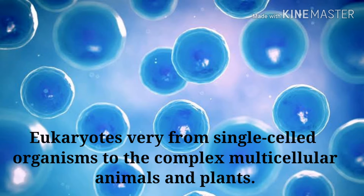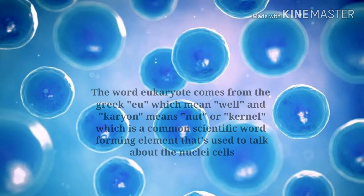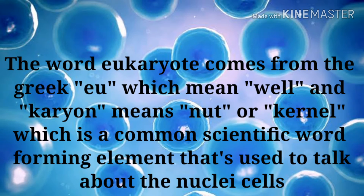Eukaryotes vary from single-celled organisms to complex multicellular animals and plants. In fact, most living things are eukaryotes, made up of cells with distinct nuclei and chromosomes that contain their DNA. The word eukaryote came from 'eu,' which means 'well,' and 'karyon,' which means 'nut' or 'kernel,' a common scientific word-forming element used to talk about the nuclei of cells.